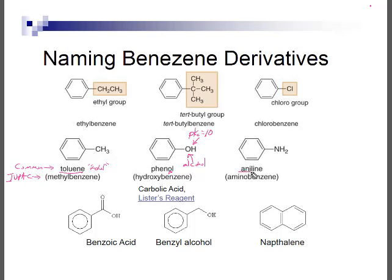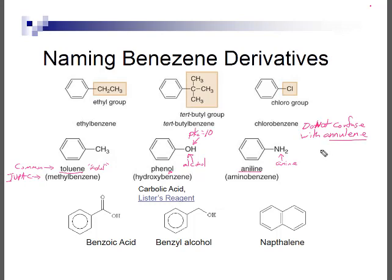The next compound is aniline, the common name for aminobenzene. Amines end in -ine, and the NH2 group is an amino group. Do not confuse aniline with annulene — benzene could theoretically be called 6-annulene, but no one refers to it that way. Aniline and annulene are different things.